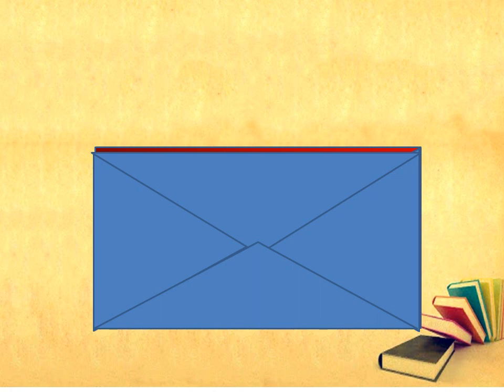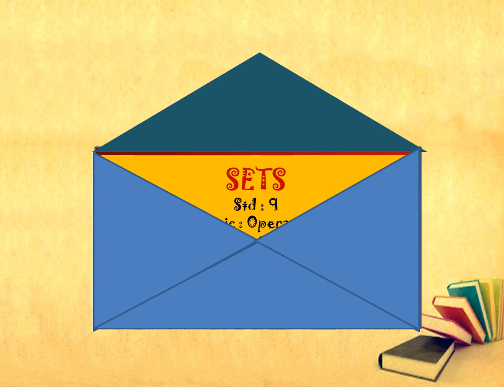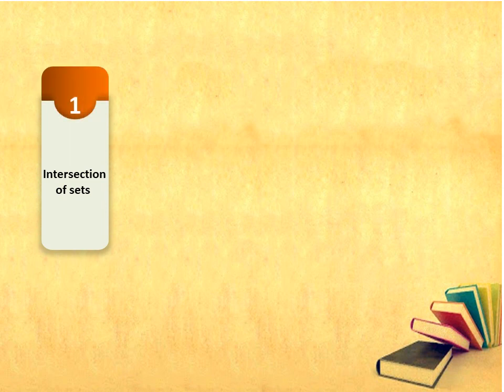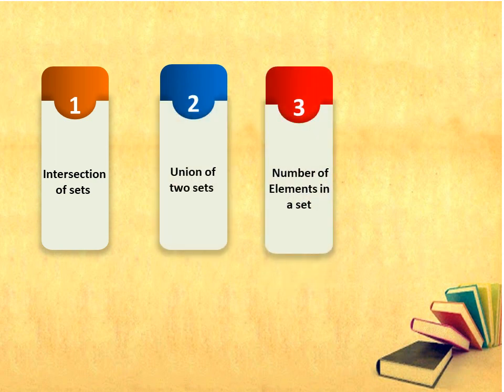Hence, we have reached the last part of your lesson. Today, we are going to learn and understand operations on sets. Under the operations on sets, the points we are going to cover today are: first, intersection of sets; second, union of two sets; third, number of elements in a set; and last, disjoint sets.